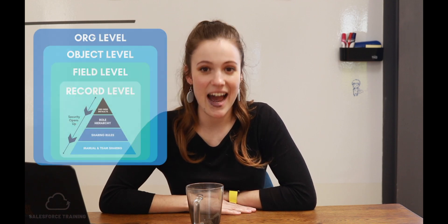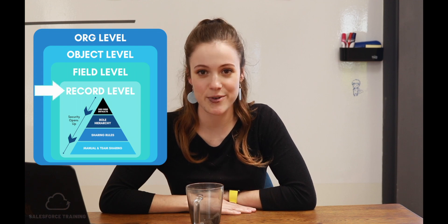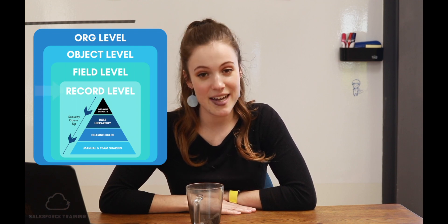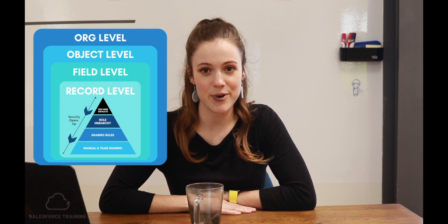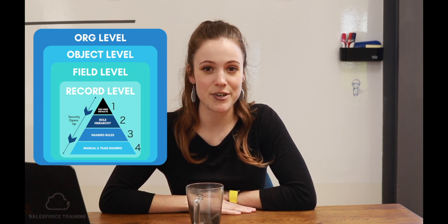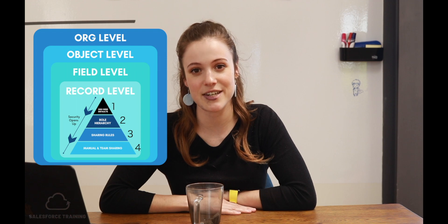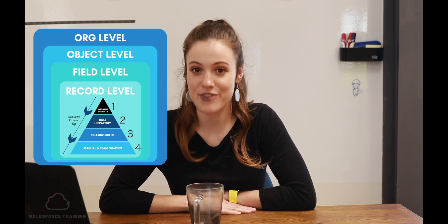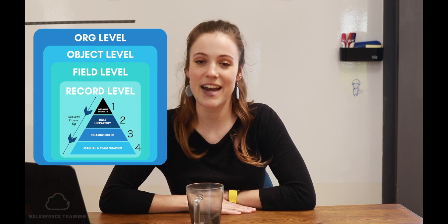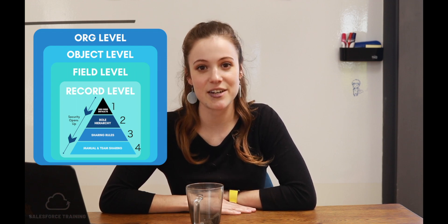Finally, our innermost level is the records. Within the record level, there are four subsections. We start with the most restrictive level and then as we work through the sections, we are gradually opening up access to these particular records.